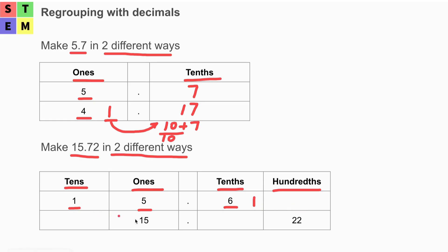That additional one from the tenths place must move to the hundredths place. We already know there is two at the hundredths place. So we move one over there, and we add one to the hundredths place — that gives us 12 at the hundredths place.